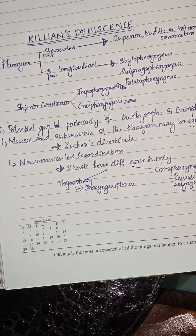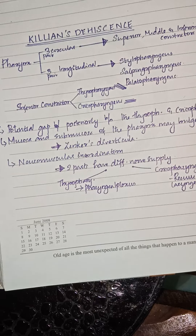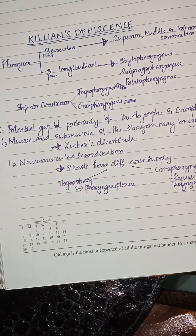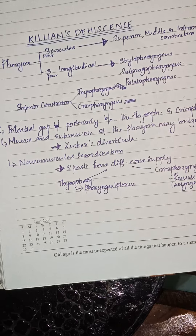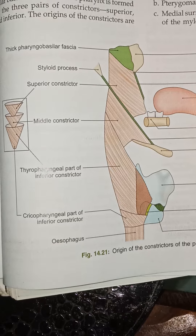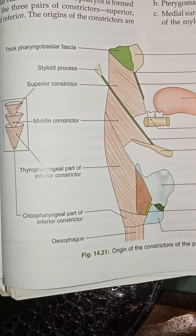The inferior constrictor in turn consists of two parts: the thyropharyngeus, made up of oblique fibers, and the cricopharyngeus, made up of transverse fibers. In the posterior wall of the pharynx there is a potential gap between the thyropharyngeus and the cricopharyngeus. This gap is known as Killian's dehiscence.